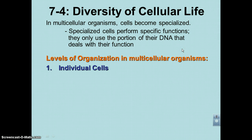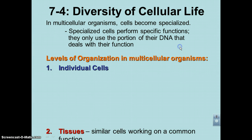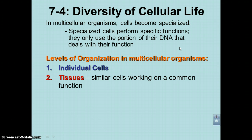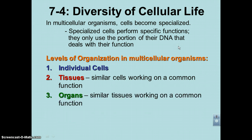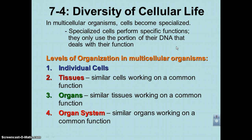The levels of organization in a multicellular organism begin with the individual cell. The next step is called a tissue — similar cells working on a common function. The next step would be an organ, which is a collection of similar tissues working on a common function. And then finally, you have the organ system, where similar organs work on a common function.